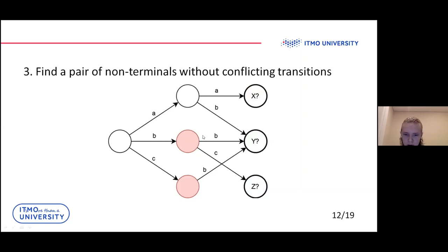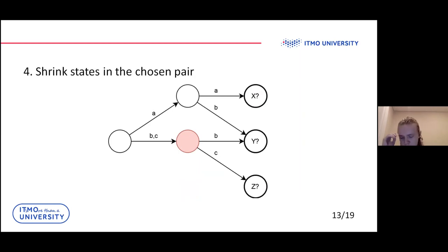Here we can see we found this pair and there is no transitions which lead to different states. We can check for B with both lead to Y question mark and for C here, we have a transition and in the bottom one, we do not have any transition by symbol C. So we just shrink it and then find another pair.